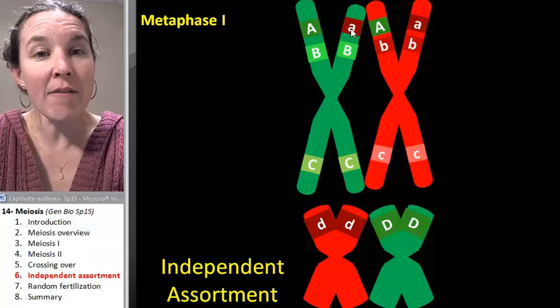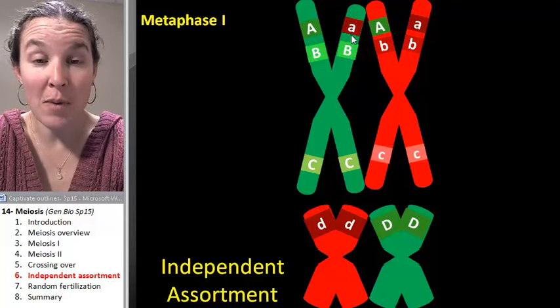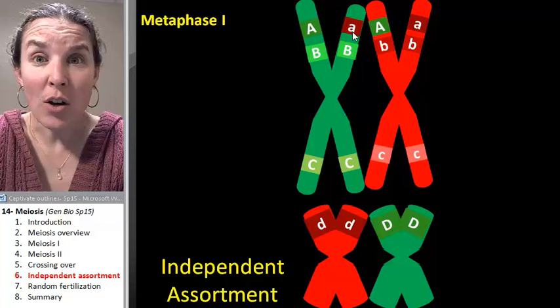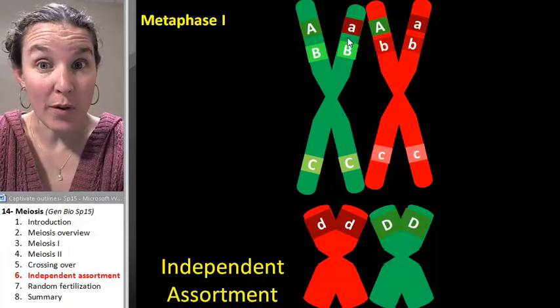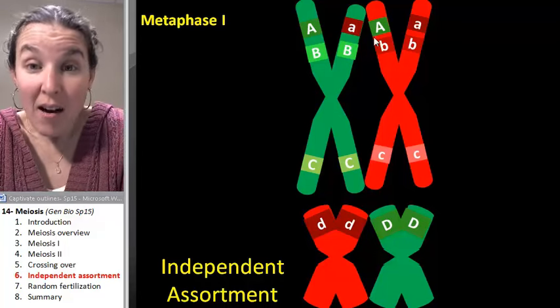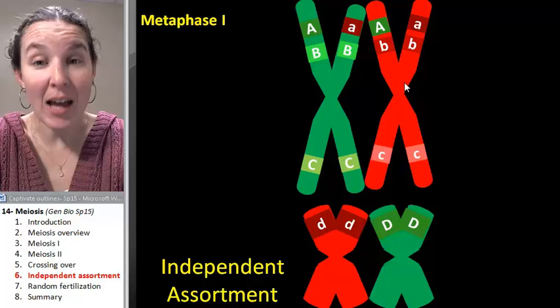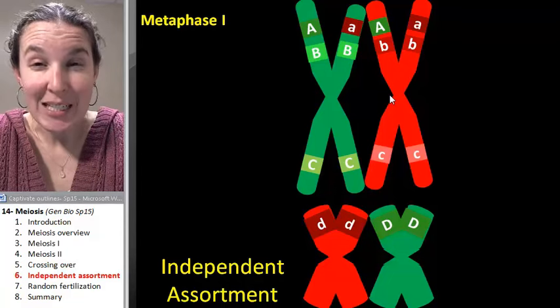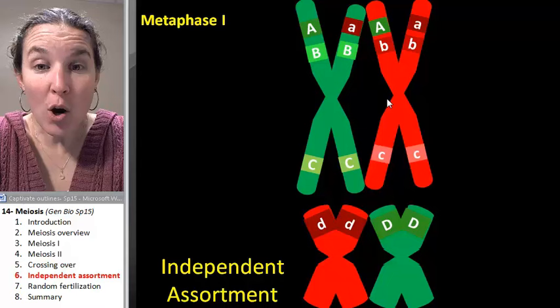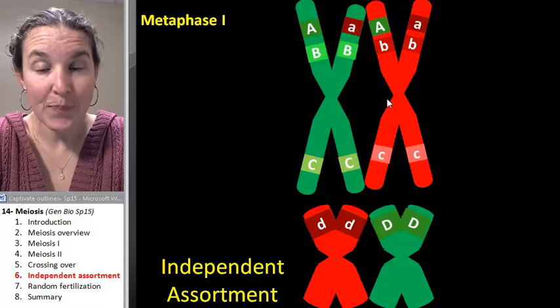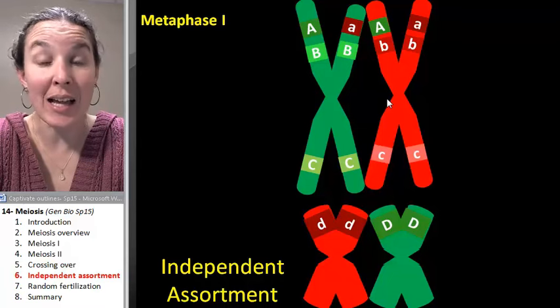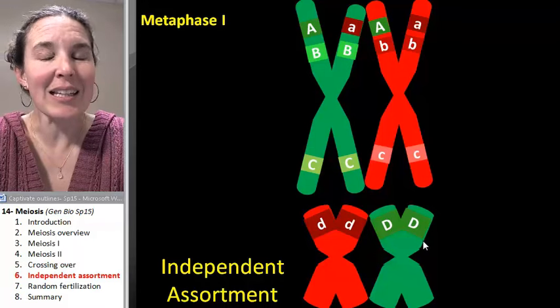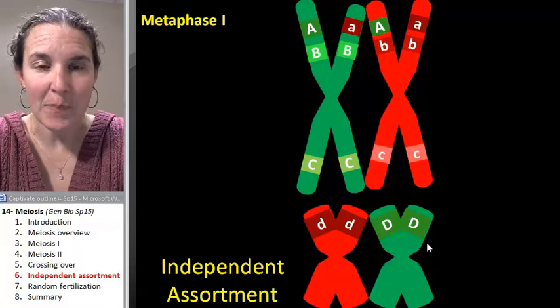You can also see that we're going to go through metaphase one. And so, I've actually, crossing over has already happened because that happens in prophase one. So now, look at how I lined up my homologs. And this is random. So, it's a flip of a coin how they're going to line up. It just so happens that I lined them up so that there was a big green on one side, but the little green is on the other side. Now, visualize.